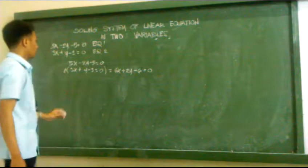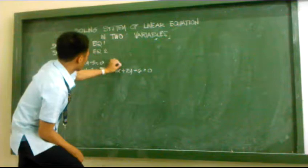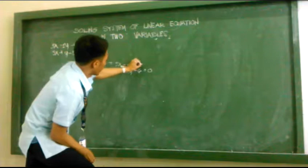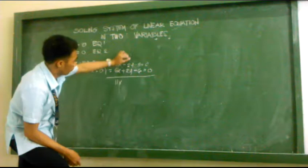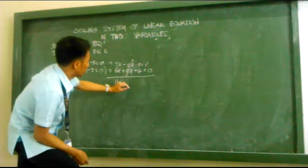Just copy equation 1: 5x minus 2y minus 5 equals 0. Then we will add these two equations. We will have 5 plus 6 equals 11x. Negative 2y plus 2y will be 0. Negative 5 plus negative 6 equals negative 11.